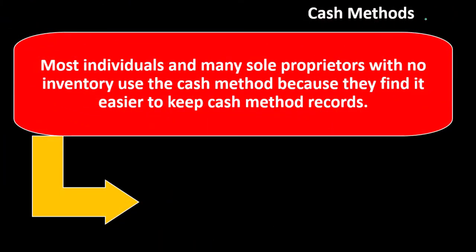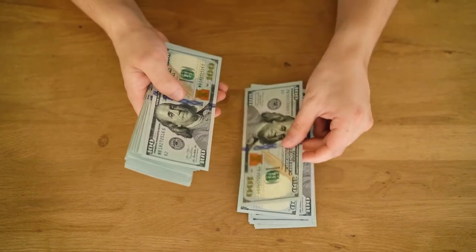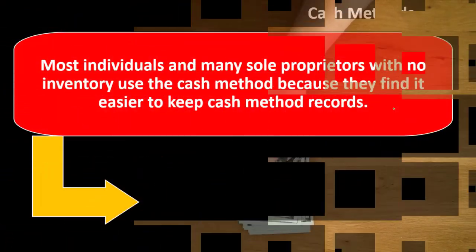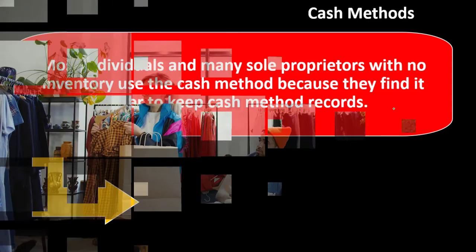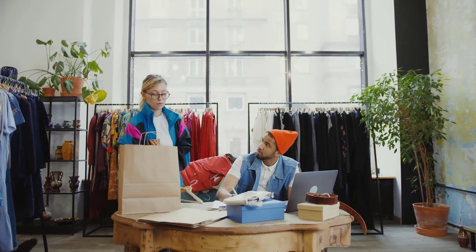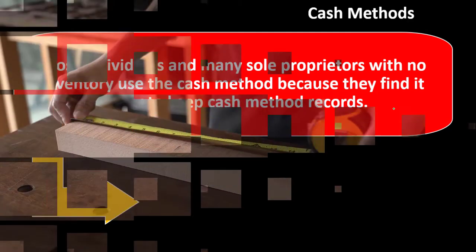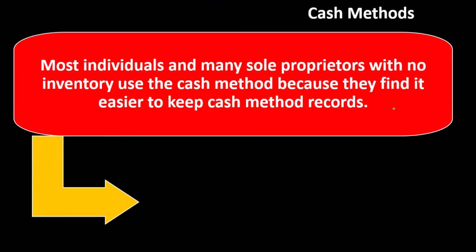Most individuals and many sole proprietors with no inventory use the cash method because they find it easier to keep cash records. The cash method is typically thought of as the easier method because for a basic business, you can essentially create your books from the cash activity. Cash flow is like the lifeblood of the business. If you're doing an accrual method, you'll have many more transactions without cash related to them, which makes it more complex — though it is more accurate in some ways, and some businesses are required to use accrual by the nature of their business.